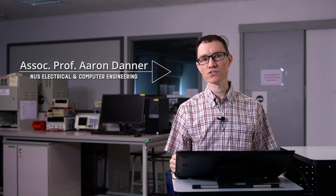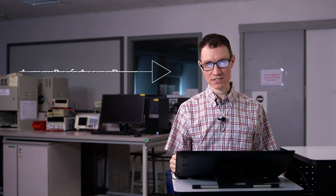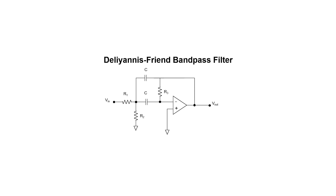We've seen how it's possible to use Sallen-Key circuits to design either a 2-pole low-pass filter or a 2-pole high-pass filter. If we wanted instead to make a 2-pole bandpass filter, the appropriate circuit to use is the Deliyannis-Friend circuit.